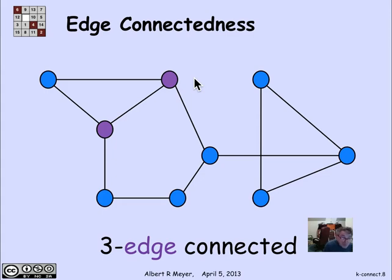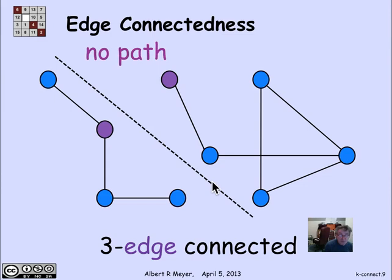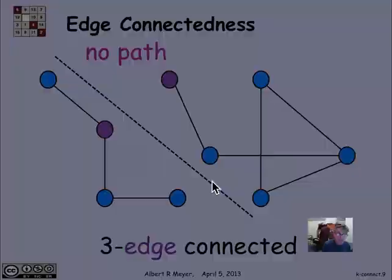If you remove three, on the other hand, you can separate them. So if I cut these three edges, I might have been more obvious to cut that one, but I'm doing it this way to make it interesting. If I cut these three edges, then in fact, I wind up with no path between those two vertices. So they are three edge connected, but not four edge connected, meaning you can remove two, but you can't remove three and keep them connected.